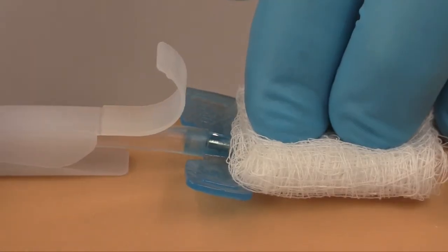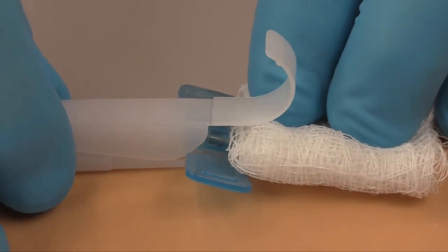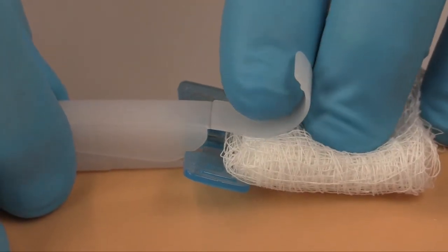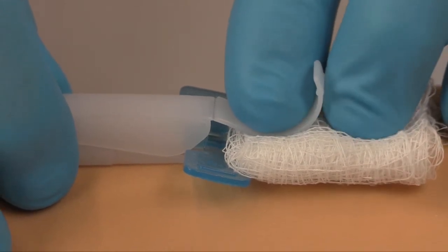Continue to move the MasterGuard Plus toward the needle until the lower jaw is under the wings but not touching the puncture site. Place your index finger on the finger shield and gently place your middle finger on the gauze over the puncture site.